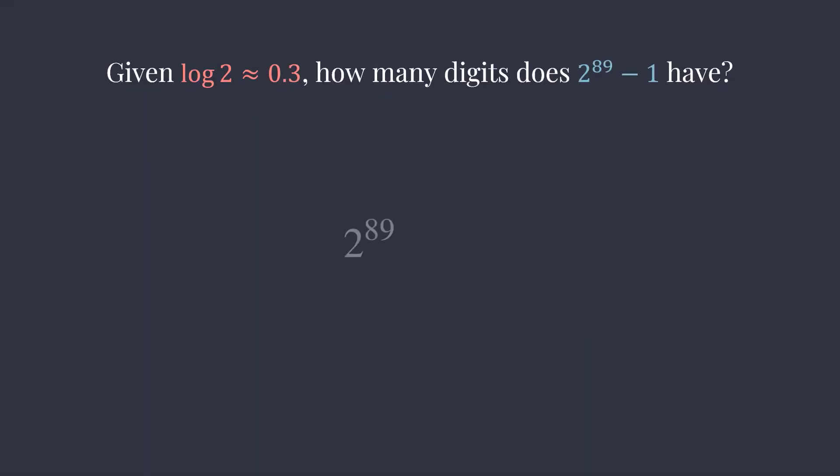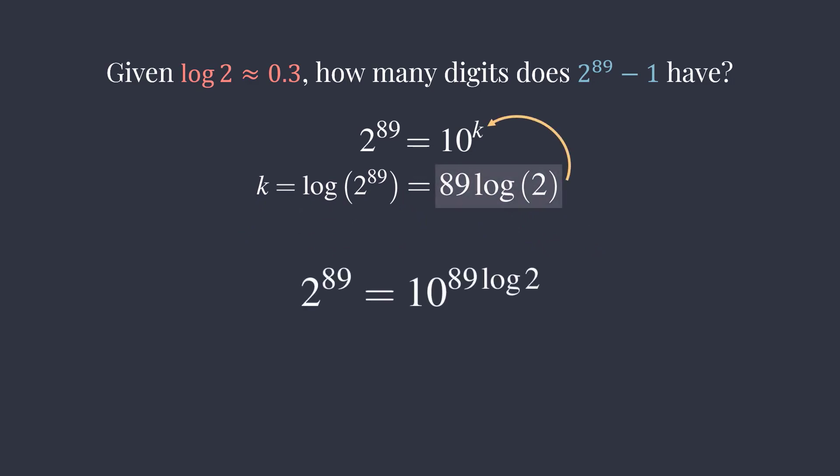First, we can write 2 to the 89 as 10 to the k power. Solving for k, we get log of 2 to the 89, which is 89 times log of 2 by bringing the exponent to the front. So, making the substitution of k, we get 2 to the 89 equals 10 to the 89 times log of 2.